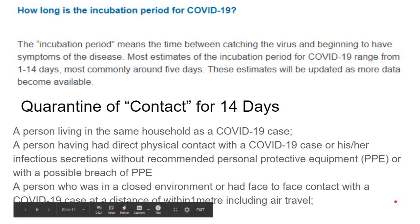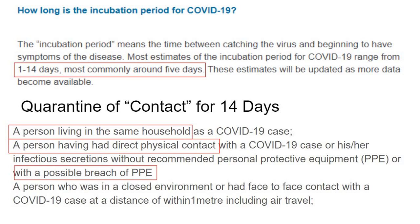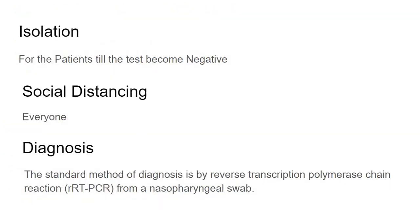If there are no comorbid conditions, the case fatality rate is less than 1%. The incubation period for COVID-19 ranges between 1 to 14 days, most commonly around 5 days. For quarantine, contacts are quarantined for 14 days. Contacts include: a person living in the same household as a COVID-19 case, a person having direct physical contact, a person who had contact without PPE or with possible PPE breach, and a person in a closed environment or face-to-face contact within 1 meter, including air travel. Isolation is for the patient until the test becomes negative; social distancing is recommended for everyone during the pandemic.